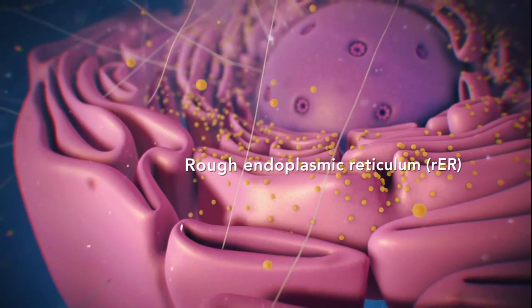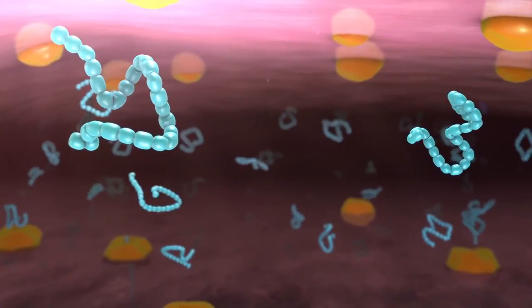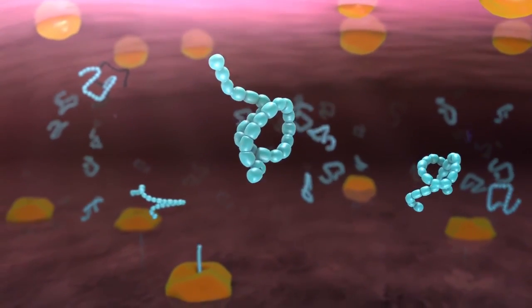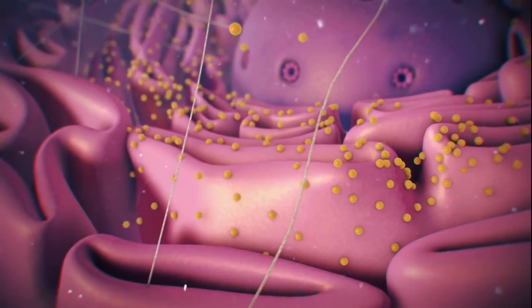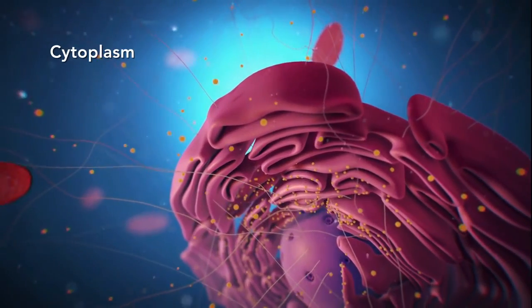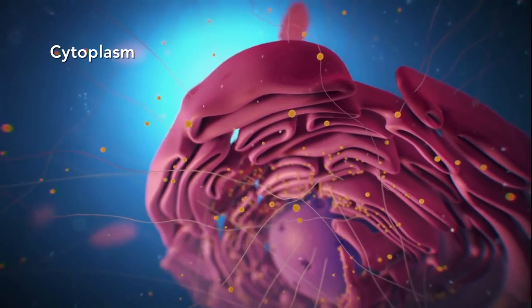When Ricin enters the endoplasmic reticulum through a chaperone protein, the endoplasmic reticulum tries to process the Ricin but cannot. So it transports the Ricin through the cytoplasm, which is known as the rate limiting step. This begins the decline in protein synthesis.